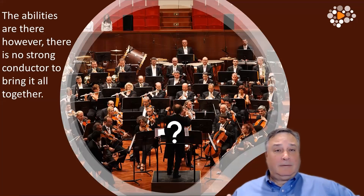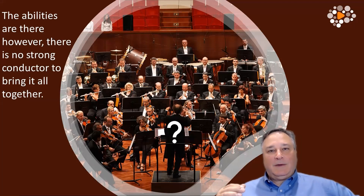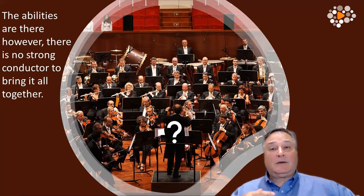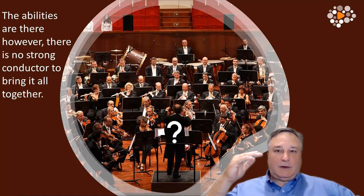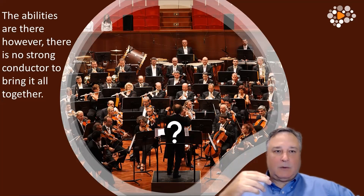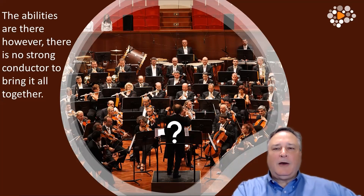The summary is this: executive function is the conductor in the brain, meaning the abilities are there, but the conductor cannot bring it all together because some elements are weak or unstructured. We need to discuss how it affects education, why this happens in the brain, and what we can do to improve it — how to foster good executive function and bring it all together.